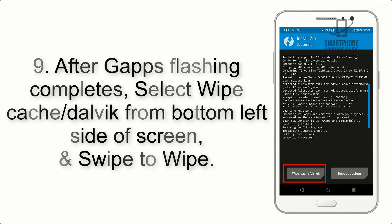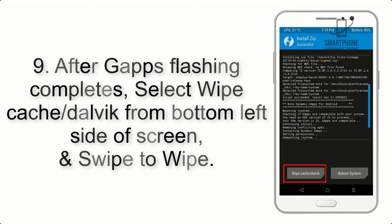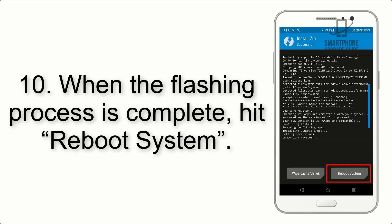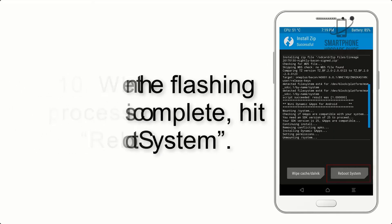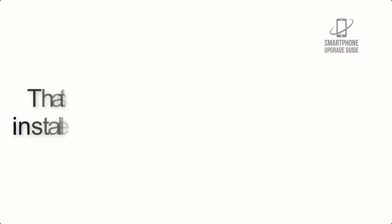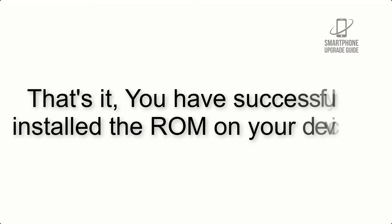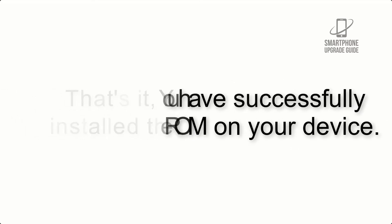Step 9: After gapps flashing completes, select Wipe Cache and Dalvik from the bottom left side of the screen and swipe to wipe. Step 10: When the flashing process is complete, hit Reboot System. That's it — you have successfully installed the ROM on your device.